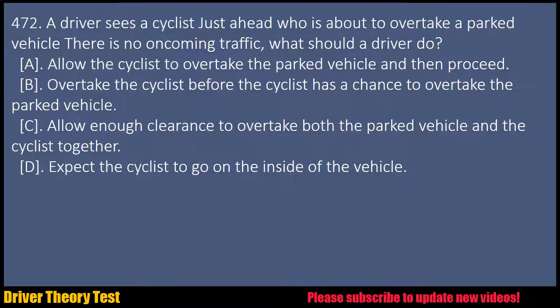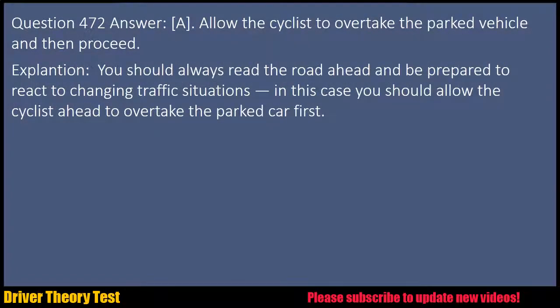Question 472: A driver sees a cyclist just ahead who is about to overtake a parked vehicle. There is no oncoming traffic — what should a driver do? A. Allow the cyclist to overtake the parked vehicle and then proceed. B. Overtake the cyclist before the cyclist has a chance to overtake the parked vehicle. C. Allow enough clearance to overtake both the parked vehicle and the cyclist together. D. Expect the cyclist to go on the inside of the vehicle. Answer: A. Allow the cyclist to overtake the parked vehicle and then proceed. Explanation: You should always read the road ahead and be prepared to react to changing traffic situations. In this case you should allow the cyclist ahead to overtake the parked car first.